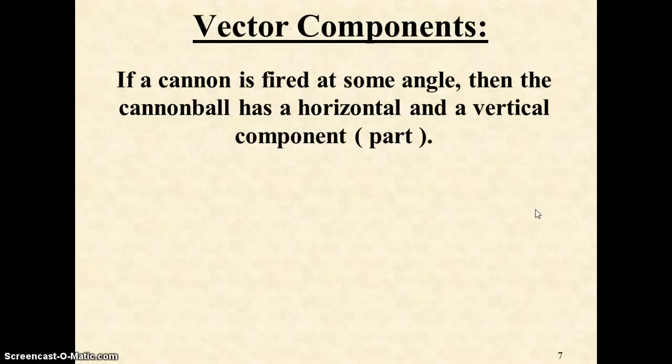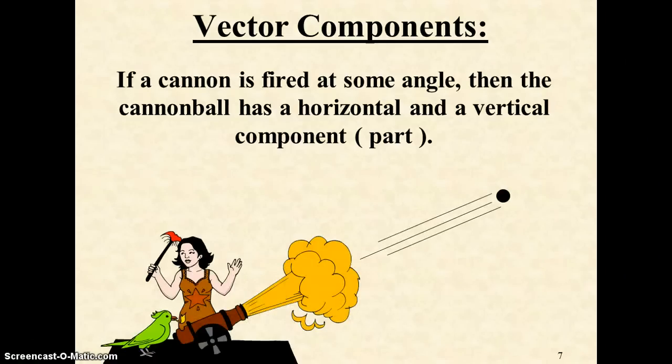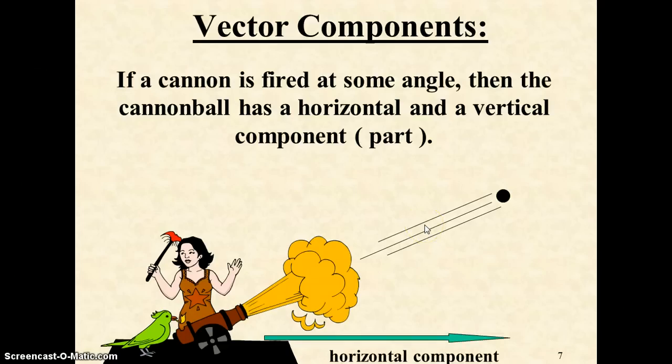Whenever anything is fired at some angle, it can have both a horizontal and a vertical component. Component is just a fancy word for part. If this thing is launched at this angle, it has a horizontal piece as well as a vertical piece. If we knew this angle, we could calculate what these pieces are, and we'll cover that in the next set of notes.